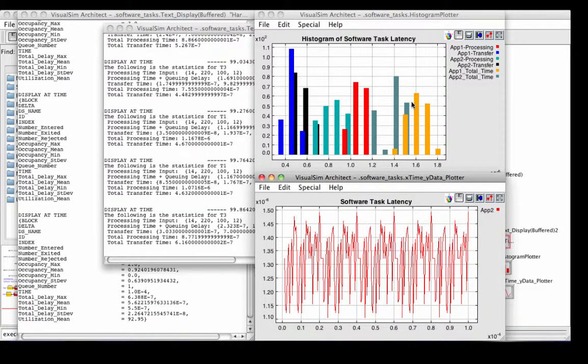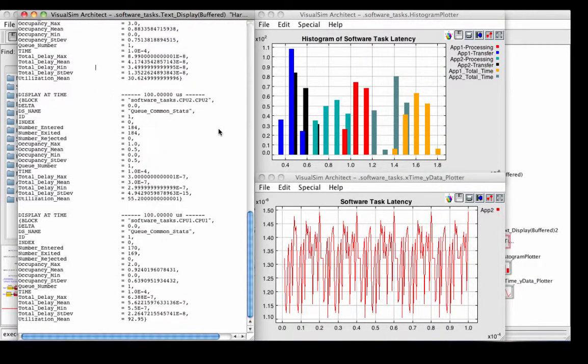At the top we have a histogram of the software latency according to the different applications that are running. And on the left-hand side we have statistics on the hardware architecture in terms of popular statistics, such as how many entered and how many exited from each individual hardware element, what was the total delay, average delay, those metrics which are important to evaluate such system performance.